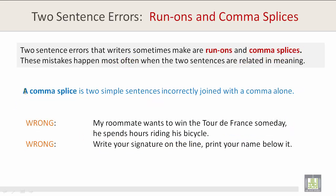A comma splice is two simple sentences incorrectly joined with a comma alone. For example: 'My roommate wants to win the Tour de France someday, he spends hours riding on his bicycle.' Another example: 'Write your signature on the line, print your name below it.'